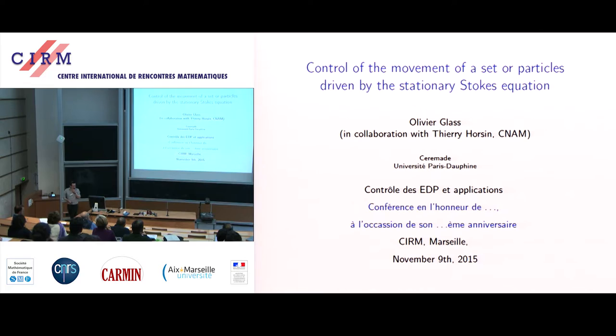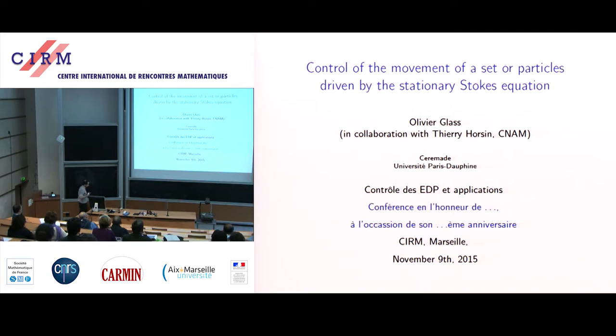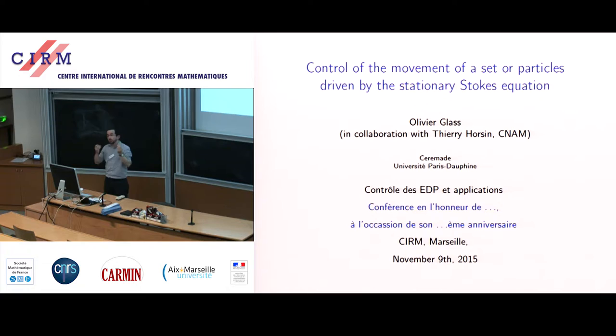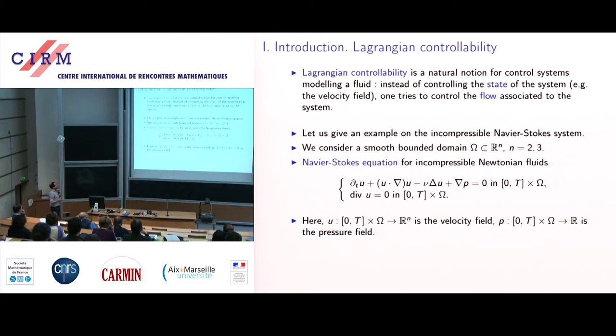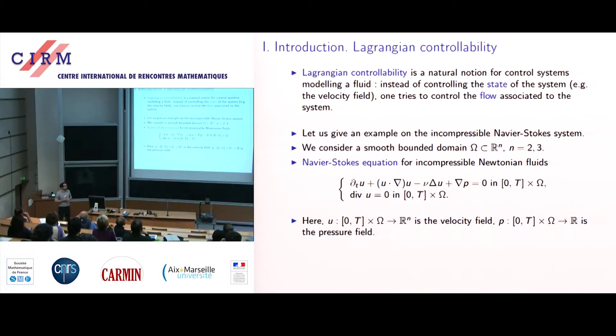What I'm going to discuss today is a problem of controllability type, but not a standard controllability problem. It's a problem that is somewhat natural for flow control when you try to understand how you can control the movement of a fluid, but it is not quite the usual notion of controllability. I should say a few words about this notion of controllability, which makes sense for fluid models — the so-called Lagrangian controllability.